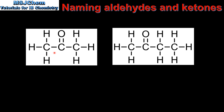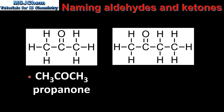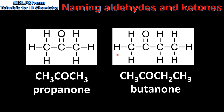Next we look at the ketones, where the carbon in the carbonyl group is attached to two other carbon groups. We'll start with the smallest ketone, which has three carbon atoms. Here we have the condensed structural formula and it's named propanone. Our next example has four carbon atoms, which is named butanone.